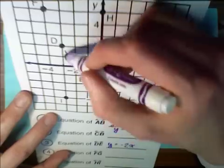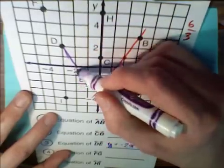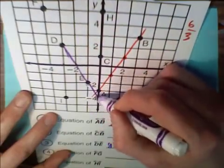Run, rise negative two, run one. Rise negative two, run one. Rise negative two, run one.